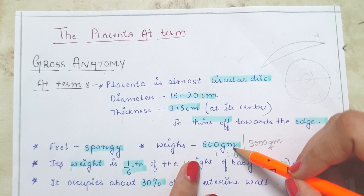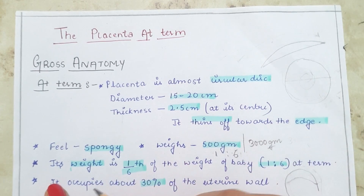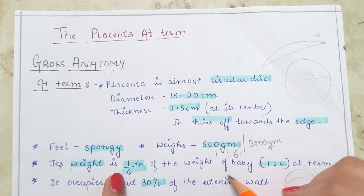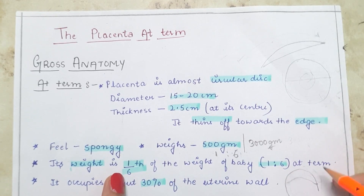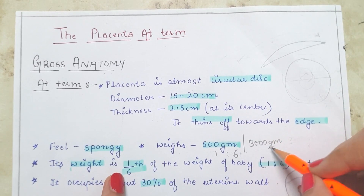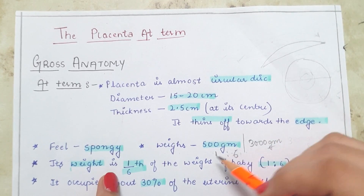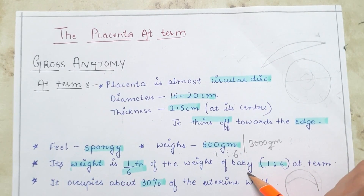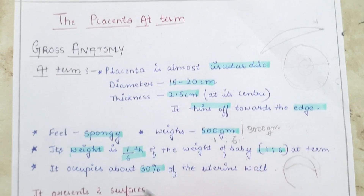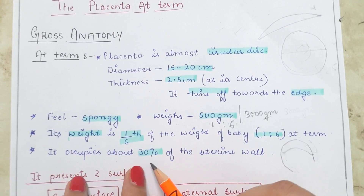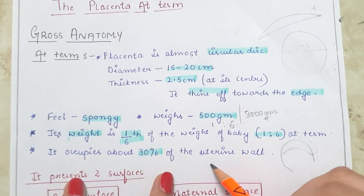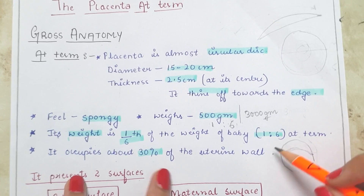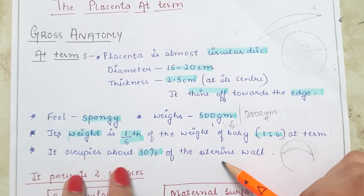The weight of the placenta is 500 grams on average at term, which is one-sixth of the baby's weight (average baby weight 3000 grams). The placenta occupies 30% of the uterine wall. The placenta has two surfaces: the fetal surface and the maternal surface.